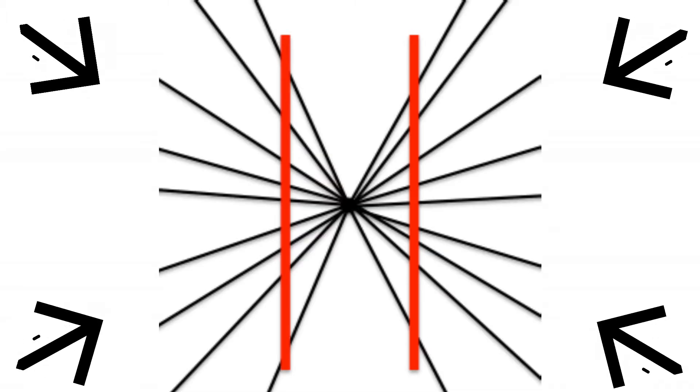Now that we know how optical illusions work, we can dive deeper into a couple of examples. Do these red lines appear bent? They're not. The black lines draw our attention to the center, making our brain assume that we are moving towards it. It also thinks that the red lines are moving, which makes them appear bent. This is caused by our brain quickly assuming movement.